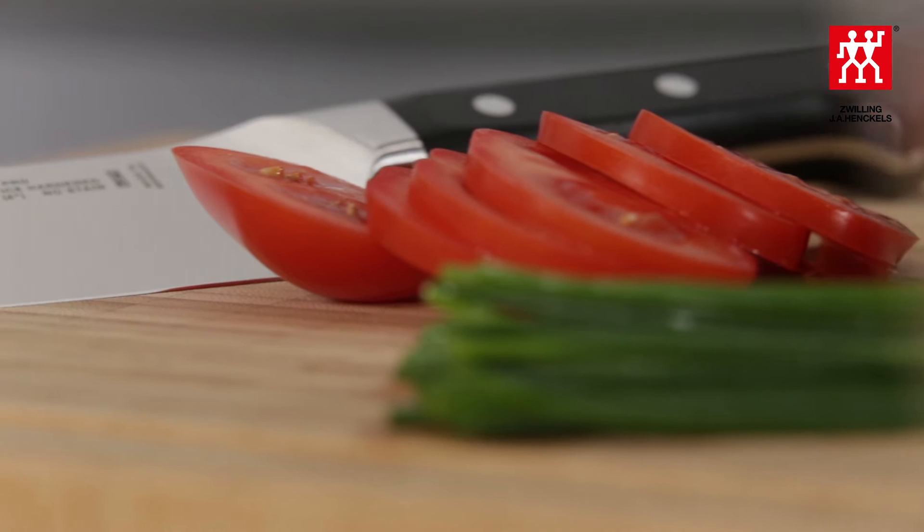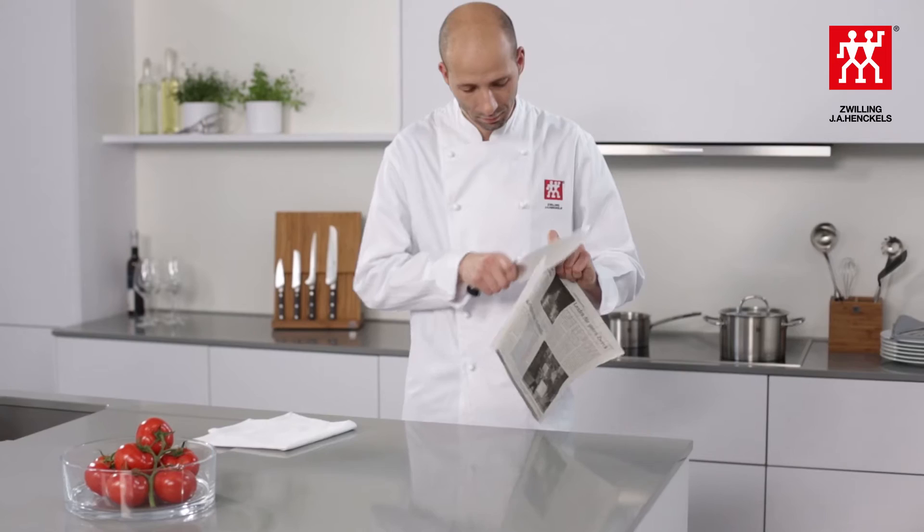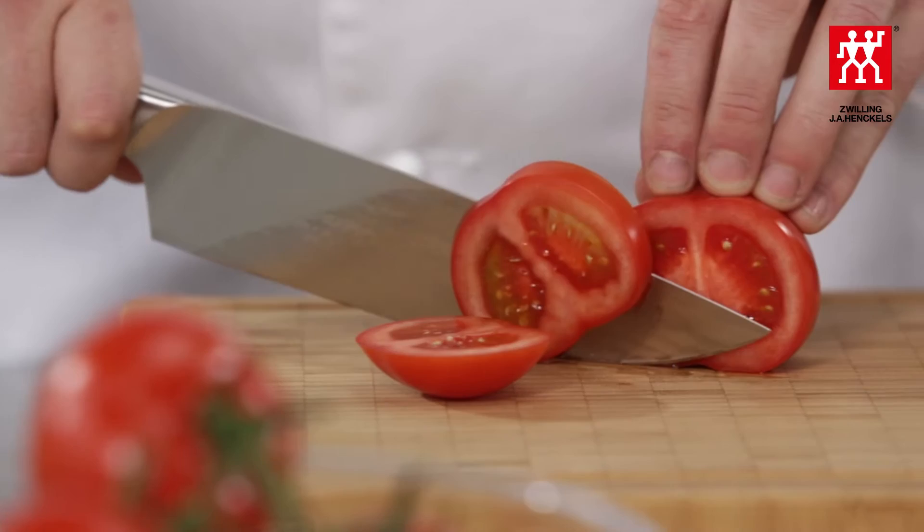Even the best knife will lose its sharpness over time. But what does sharpness actually mean? Sharpness is generally perceived subjectively. Objectively, a knife is said to be sharp when you can use it to easily cut through a normal sheet of paper.